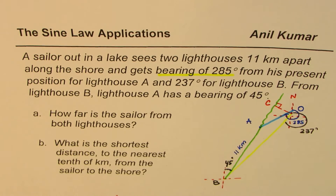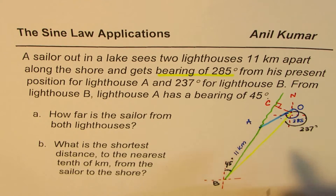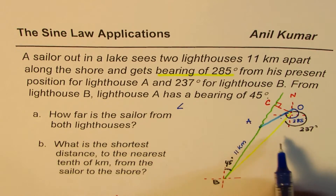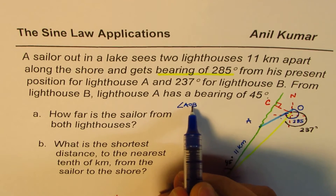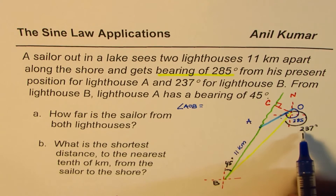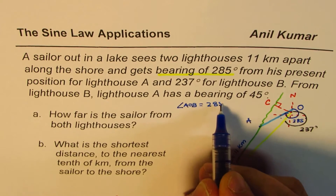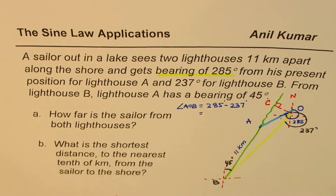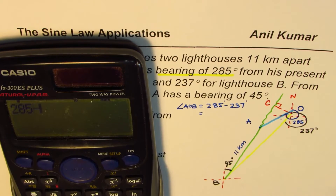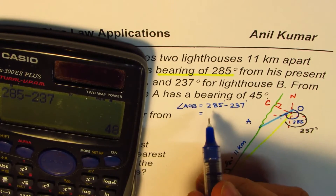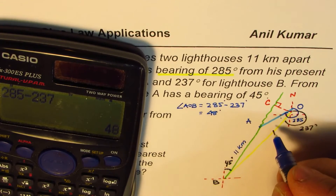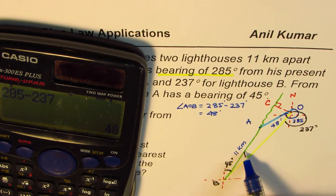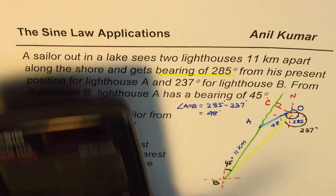Let's begin by finding angle AOB first. Angle AOB should be equal to 285 minus 237 degrees. Using the calculator: 285 minus 237 equals 48 degrees. So this angle is 48 degrees for us. Now we know this angle and the side opposite to it, so we can find the other two sides using sine law.